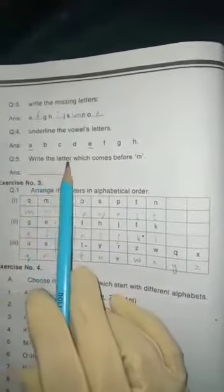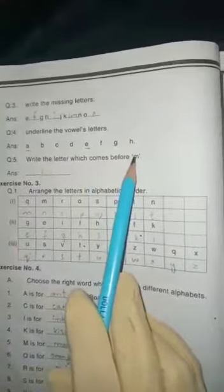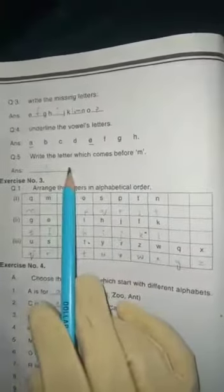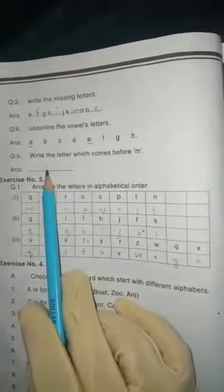Question number 5: Write the letter which comes before M. Here we have M. The first letter comes in the alphabet before M, so you have L, M. We have L before M, so we write here L.